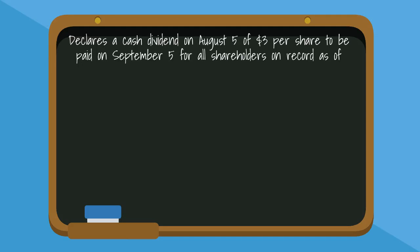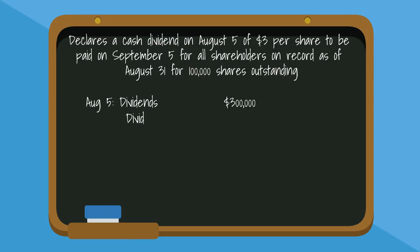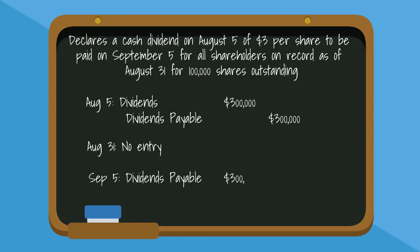The number of shares outstanding are 100,000. August 5th is the date of declaration — the company would record a debit to dividends declared for $300,000 and a credit to dividends payable for $300,000. August 31st is the date of record — there is no journal entry on this date; the company needs to have a record of who owns the stock and how many shares, but no journal entry is made. September 5th is the date of payment — the company would record a debit to dividends payable for $300,000 and a credit to cash for $300,000.